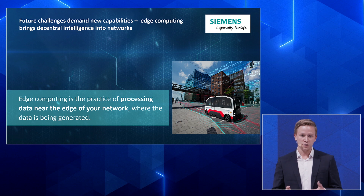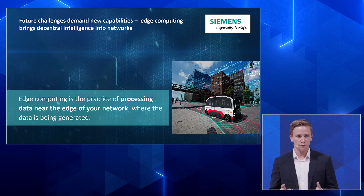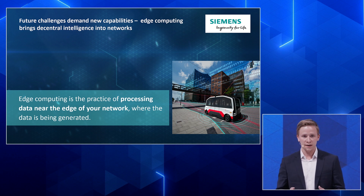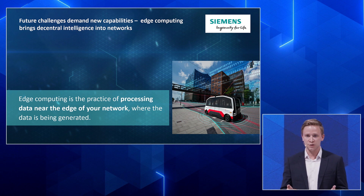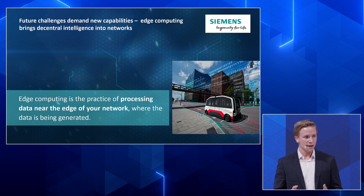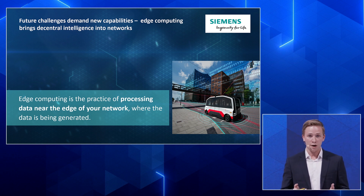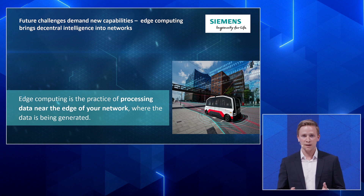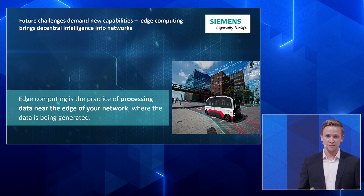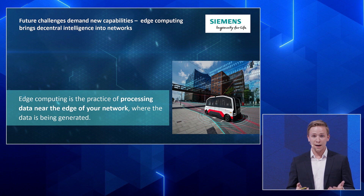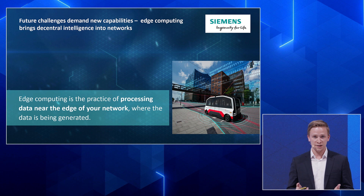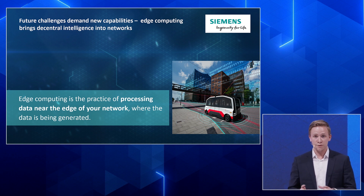Edge computing is about processing data near the edge of your network instead of sending it to a centralized unit. You need it in many technology areas today. Think about autonomous cars — this autonomous bus captures data from the environment permanently, analyzes it, and takes decisions to maneuver safely and securely through traffic.